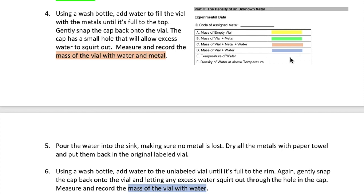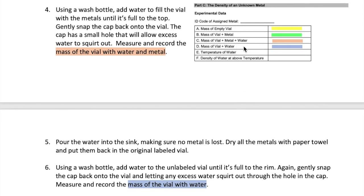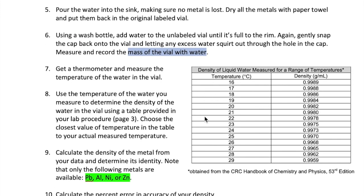For the last two data rows, you want to first use the thermometer to measure the temperature of the water inside the vial and record it here. This temperature can then be used to determine the density of the water in the vial from a table that's given in your lab procedure. Round the temperature you measure to the nearest value in the table. For example, if the temperature you measure is 20.4 degrees Celsius, you're going to have to use the density that's marked for 20 degrees Celsius.